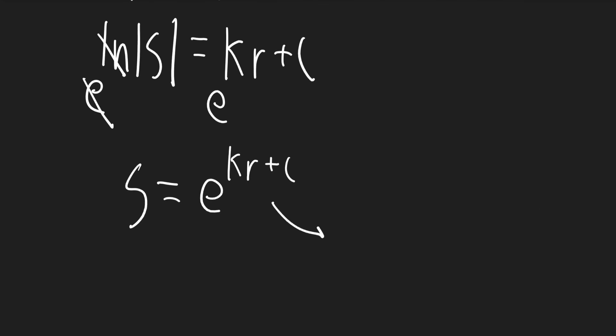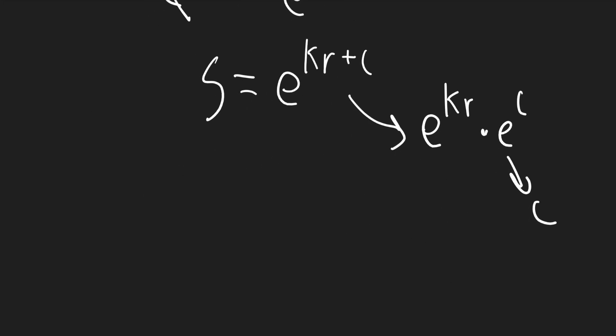Now the exponential term can be split to e to the power of kr times e to the c. And e to the c is just c. So s is equal to c e to the kr.